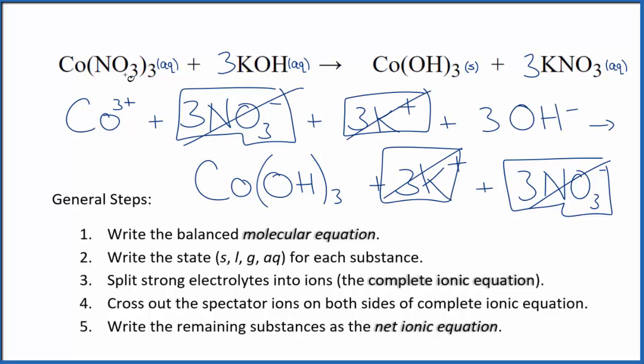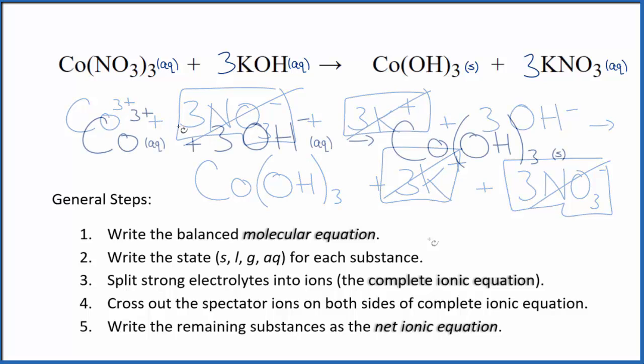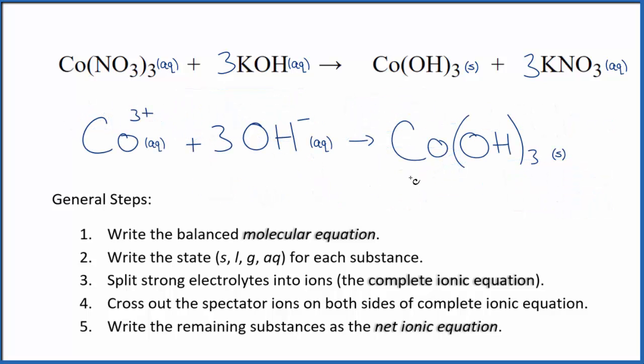So this is the net ionic equation for our Co(NO₃)₃ plus KOH. I'll clean it up, write the states. We'll have our net ionic equation. So this is our net ionic equation.